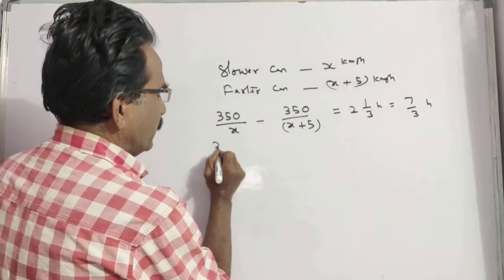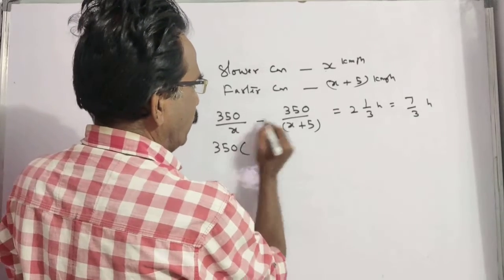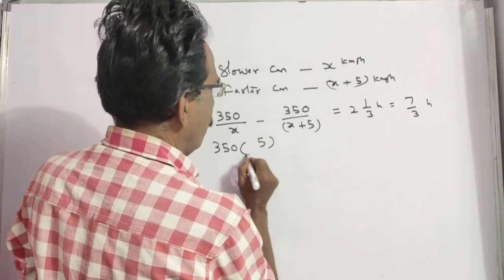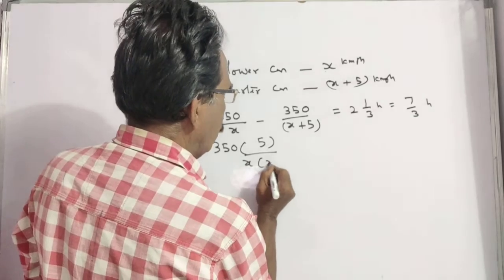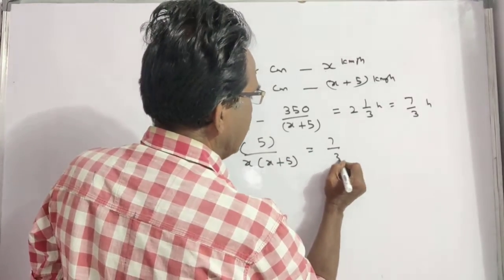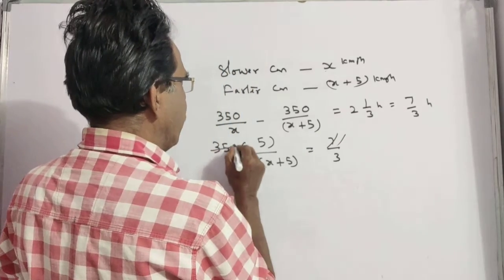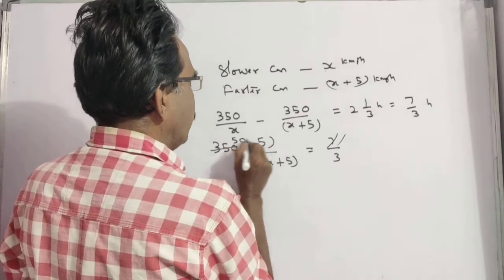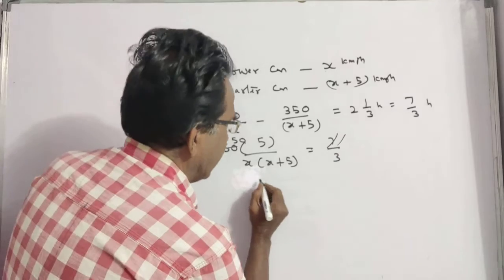Let us see, 350 into x plus 5 minus x, 5 by x into x plus 5 is equal to 7 by 3. 7 into 50 is 350, 350 into 3 is 1050. So x into x plus 5 equals 750, which gives x equals 25.